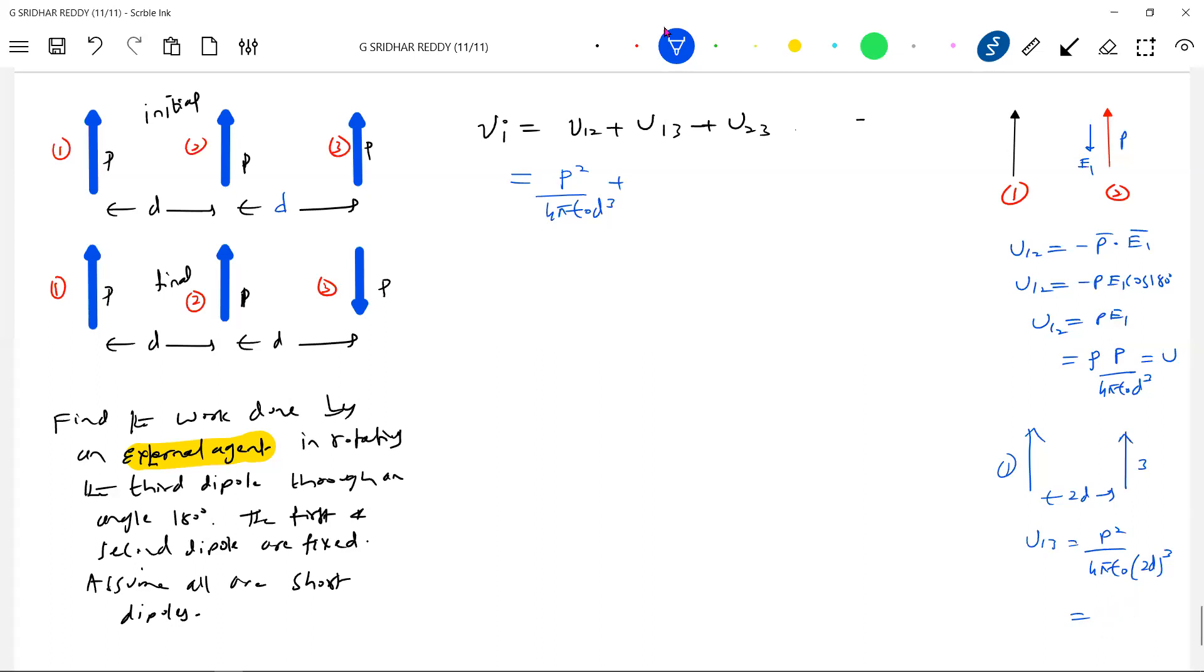So if you call this as U, then how much it should be U by 8. Please don't mess up so many things, make it generalized. The interaction potential between one and two if it is U, between one and three it will be U by 8.